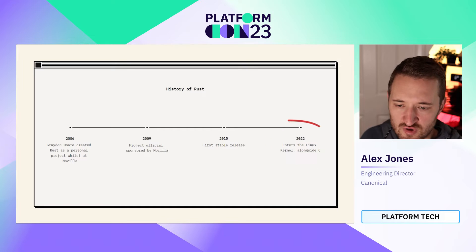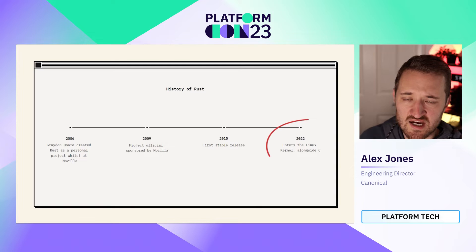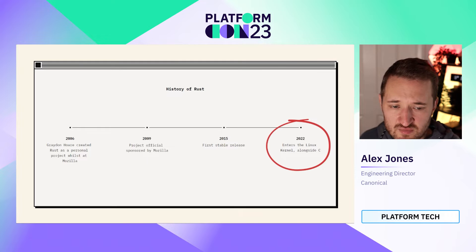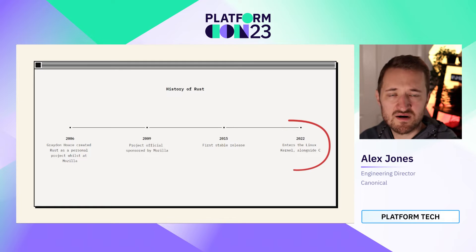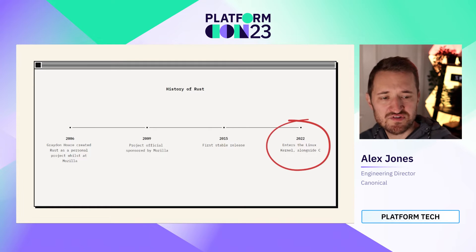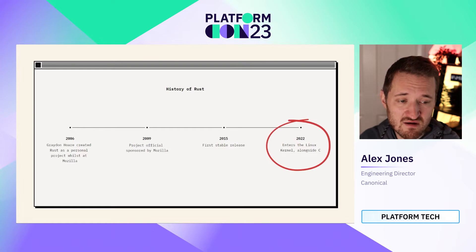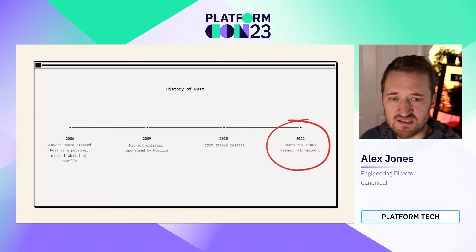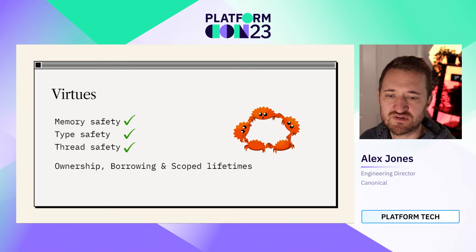Just to take you back if you're not familiar — the history of Rust is that it was actually a personal project by Graydon Hoare working at Mozilla. It took a few years to build momentum until Mozilla officially sponsored Rust, and then we saw the first stable release in 2015. But the most exciting milestone is that Rust entered the Linux kernel, which is a real hallowed and challenging thing to do alongside C. Rust is the only other language inside the Linux kernel aside from C.